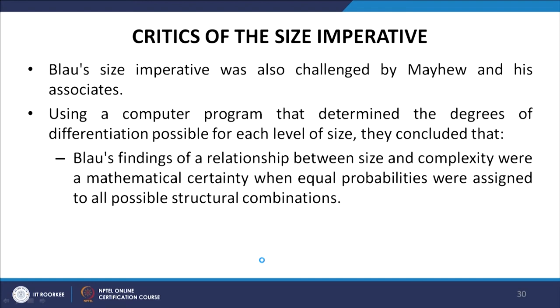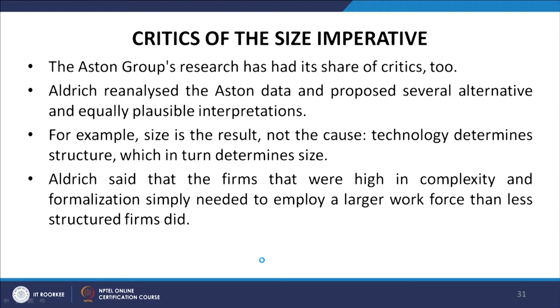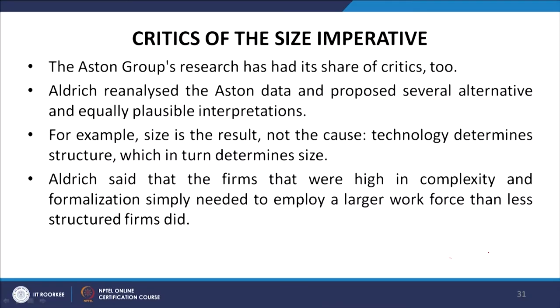Baleo's size imperative was also challenged by Mayhew and his associates. Using a computer program that determined the degrees of differentiation possible for each level of size, they concluded that Baleo's findings of a relationship between size and complexity were a mathematical certainty when equal probabilities were assigned to all possible structural combinations. Eldridge reanalyzed the Aston data and proposed alternative interpretations — for example, that technology determines structure which in turn determines size.